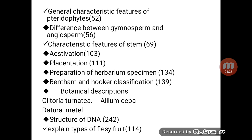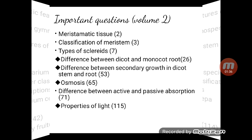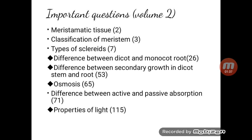Botanical description of Solanum trilobatum, Allium cepa, Datura metal. Structure of DNA, page number 242. Types of fleshy fruit, page number 114. Okay friends, that covers Volume 1. Now moving on to Volume 2.